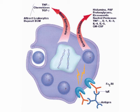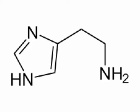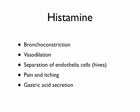The mast cell also dumps other things like prostaglandins and tumor necrosis factor, but it's mostly the histamine we worry about. Here's what the histamine molecule looks like — several carbons, a few hydrogens, and some nitrogens.